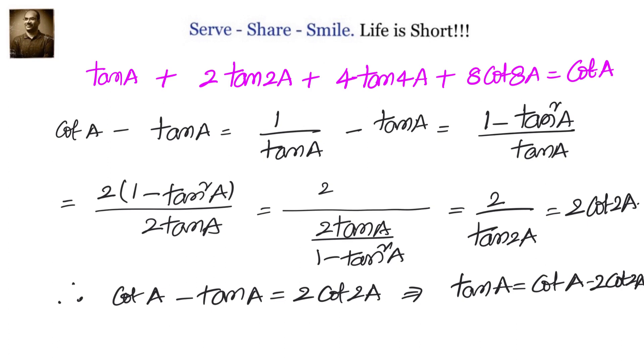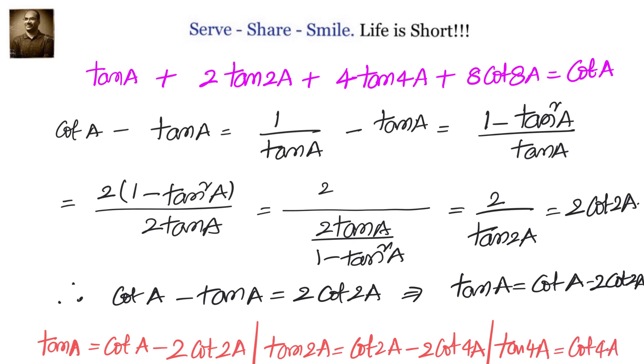So now we can take this to the next level and write down. First let's write down what we got now. That is tan a equals cot a minus 2 cot 2a. Now let's take this to next level. We can say tan 2a equals cot 2a minus 2 cot 4a. Similarly we can go to the next multiple, that is tan 4a equals cot 4a minus 2 cot 8a.